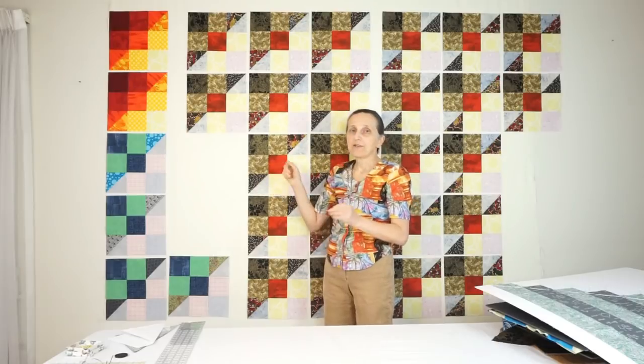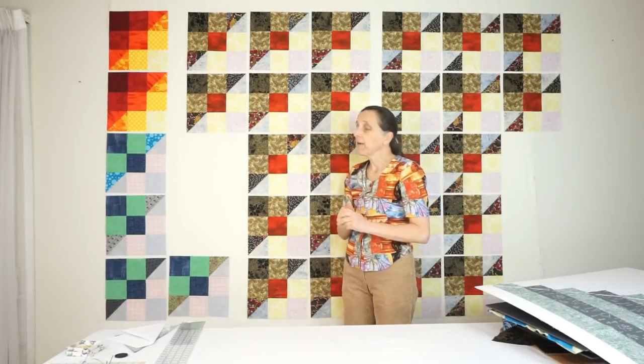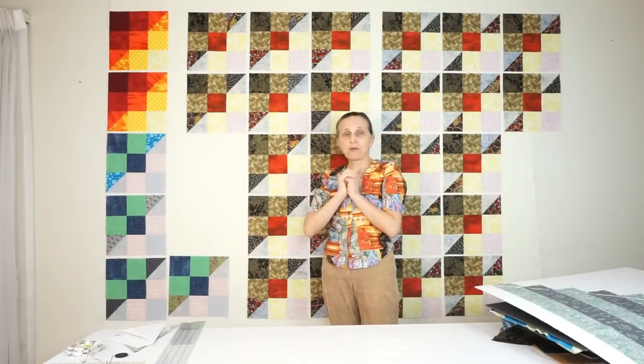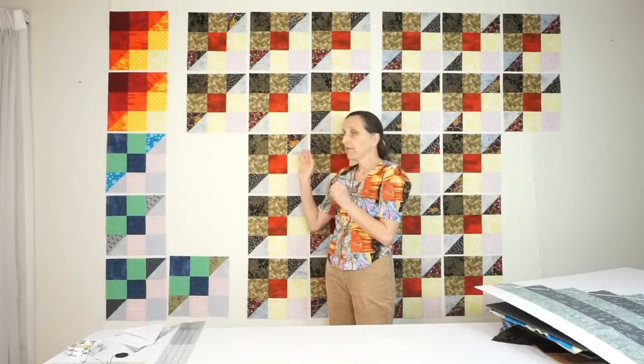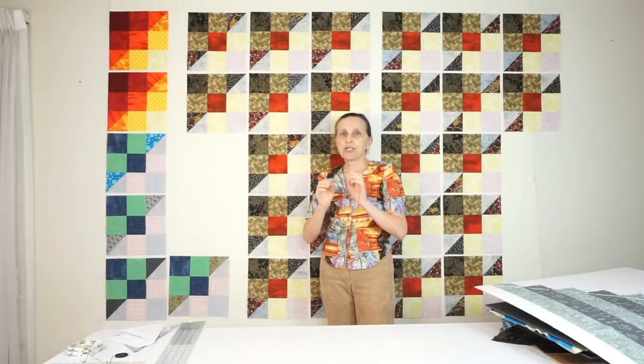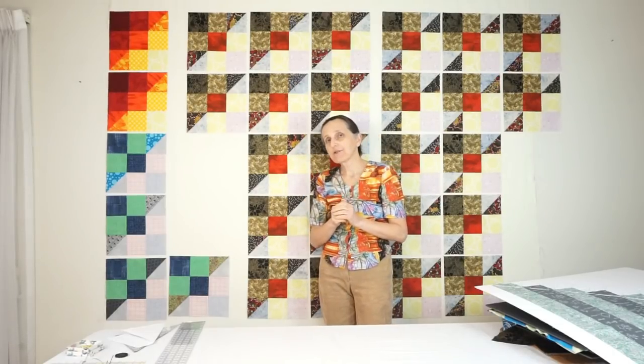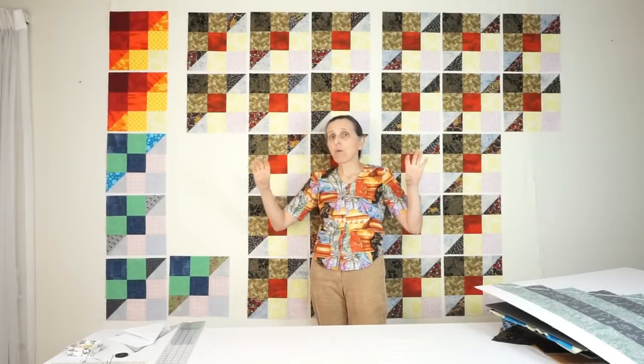How about for the triangle fabrics? Whether you're doing a scrappy look or a regular look, you need four dark and four light strips cut at strip width three and three quarters of an inch. The strips have to be at least 43 inches long.